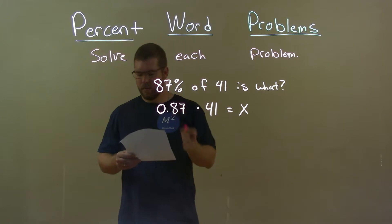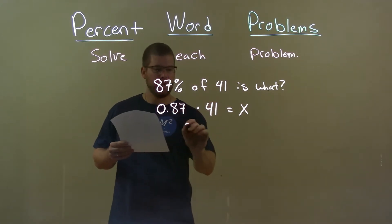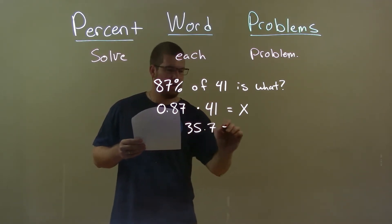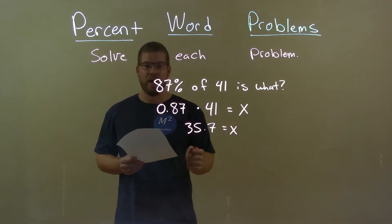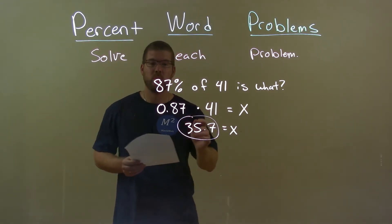Now let's solve for x. Well, 0.87 times 41 is 35.7, and there we have it. That equals x. So my final answer is 35.7.